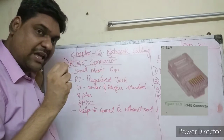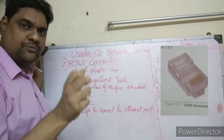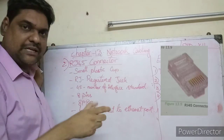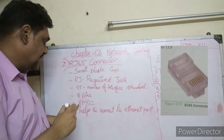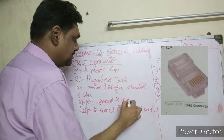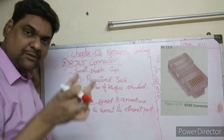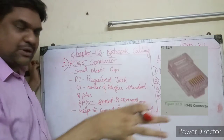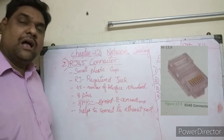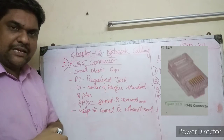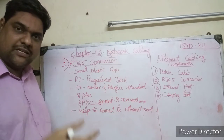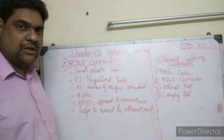The jack has 8 pins in copper color - 8 pins and 8 connections. So it is called 8P8C - 8 position 8 contact. It helps to connect to the ethernet port. This jack we can connect to the ethernet port; the patch cable helps to connect to the ethernet port.